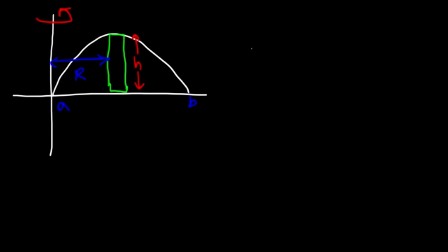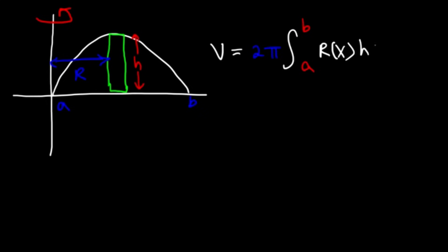Using the shell method, the equation is this: the volume is going to be equal to 2π times the integration from A to B of the radius, which is in terms of x, times the height in terms of x. So if you want to find the volume of the solid when rotated about the y-axis, the radius and the height have to be in terms of x.